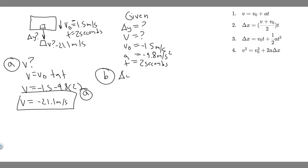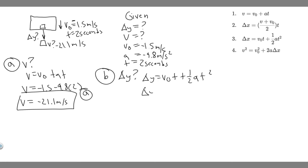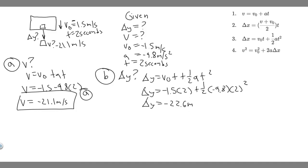To find delta y for the mailbag, we use delta y = v₀t + ½at². Plugging in: delta y = (-1.5)(2) + ½(-9.8)(2²) = -3 + (-19.6) = -22.6 meters. So the mailbag travels 22.6 meters downward.